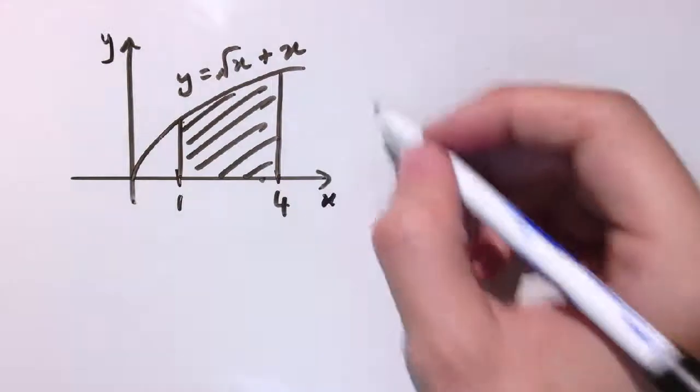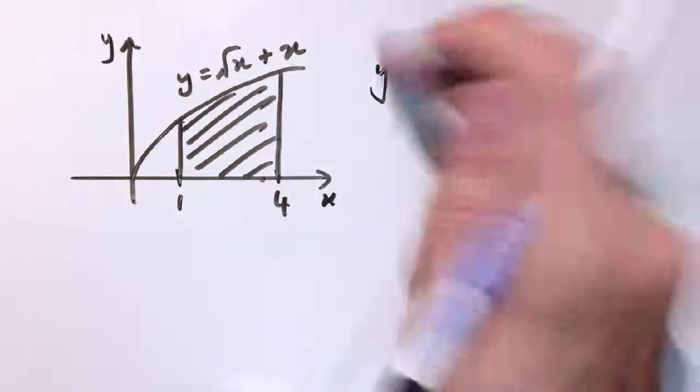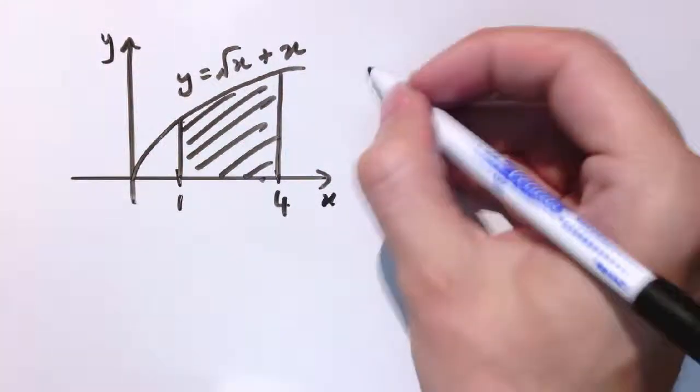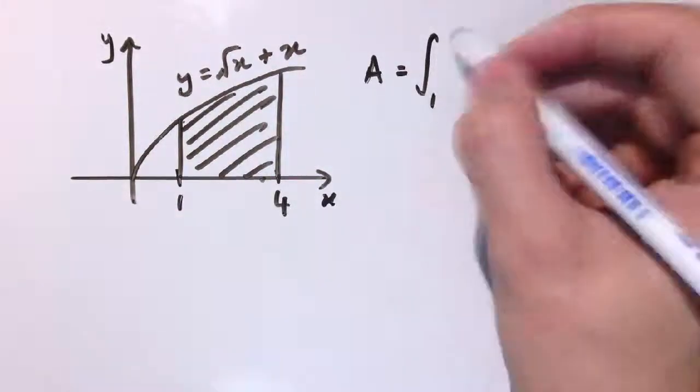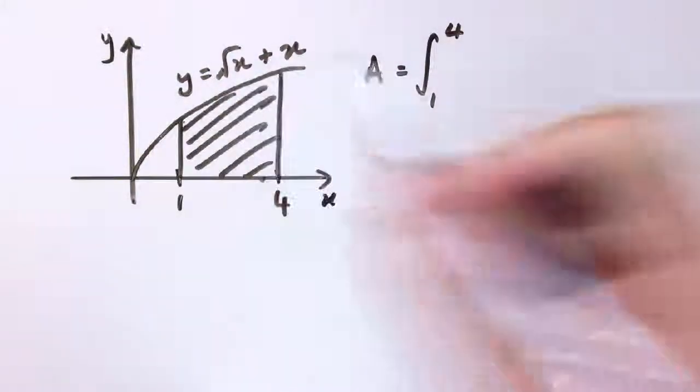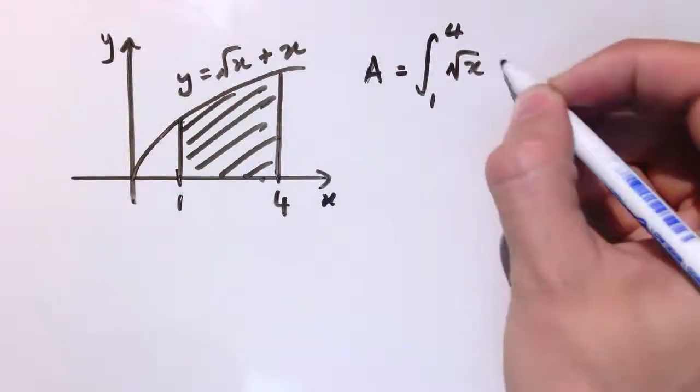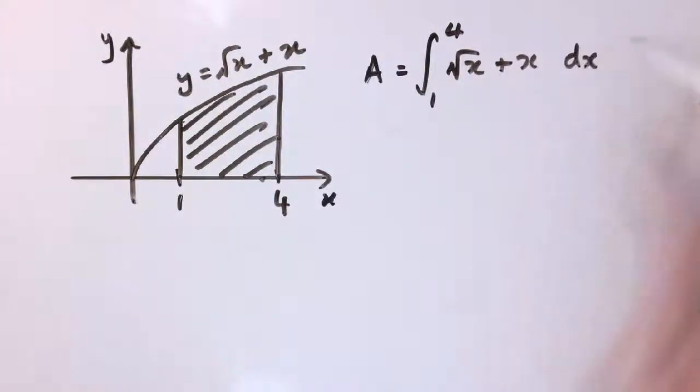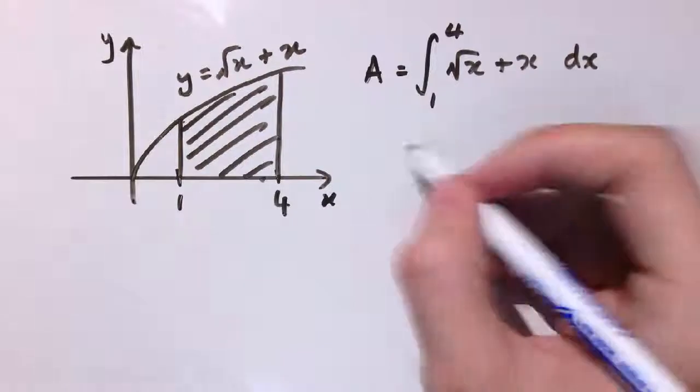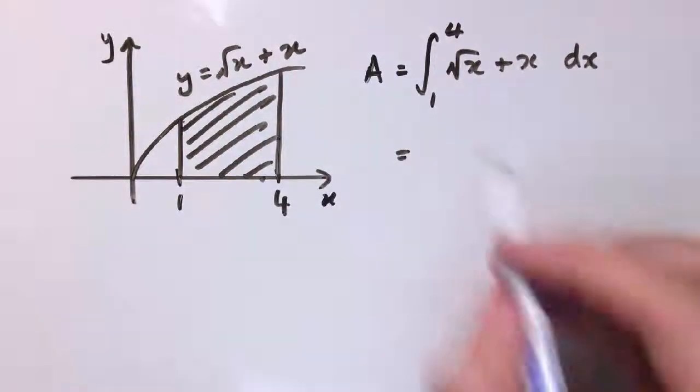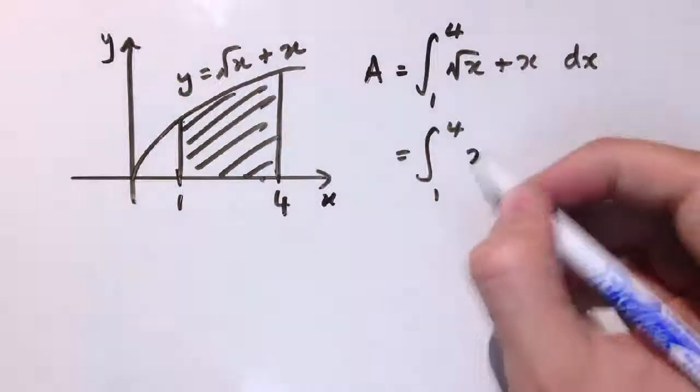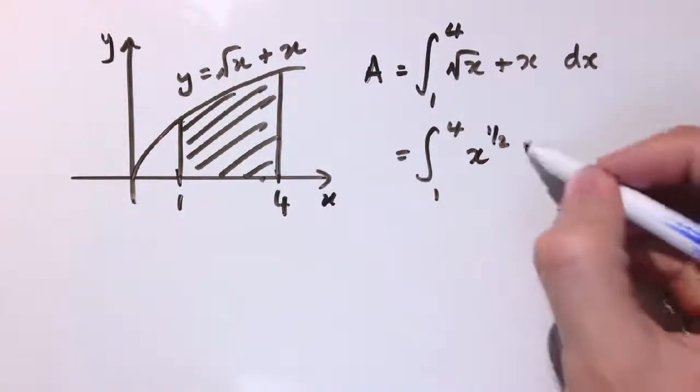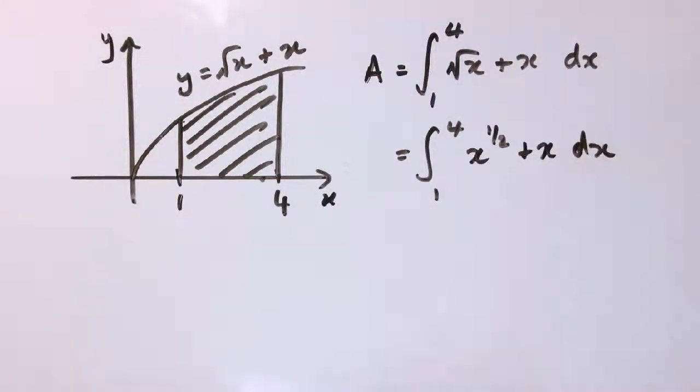So as before we do the integral, so the area that we're looking for is the integral between 1 and 4 of this curve, which is root x plus x with respect to x. Now, to do this integral, we're going to need to turn them into indices first, so this is x to the 1 half plus x with respect to x.